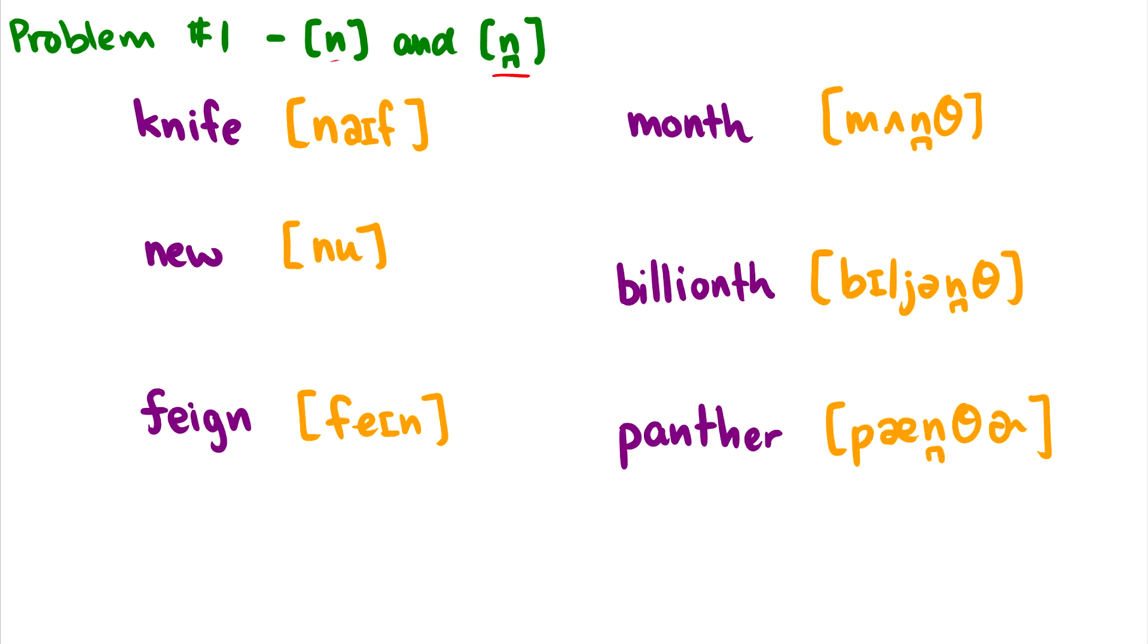So let's take a look at a data set here. We have the word knife, new, and feign, and these all have our standard alveolar [n]. But in the word month, billionth, and panther, that [n] is fronted more towards the teeth, so it sounds more like a [n̪].